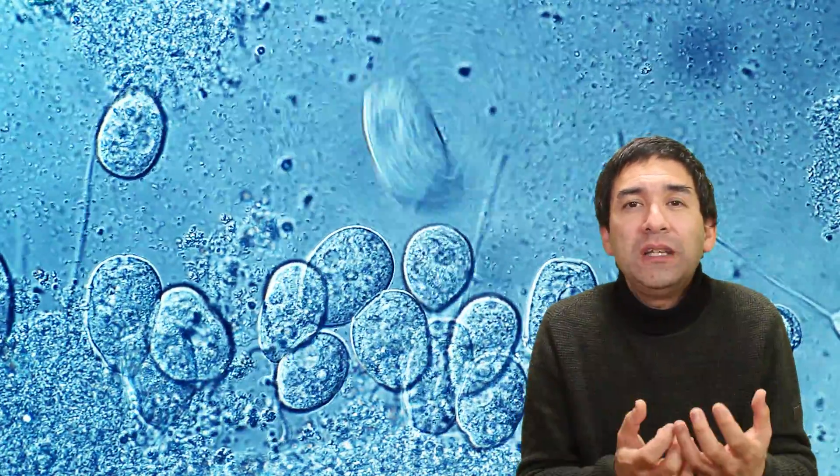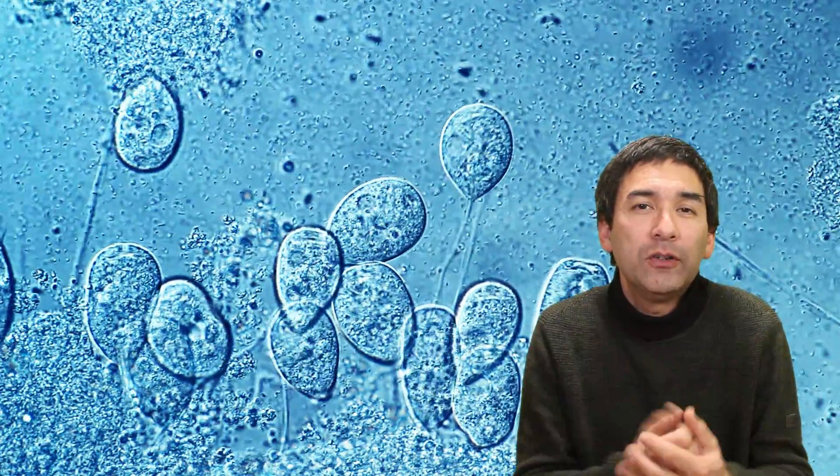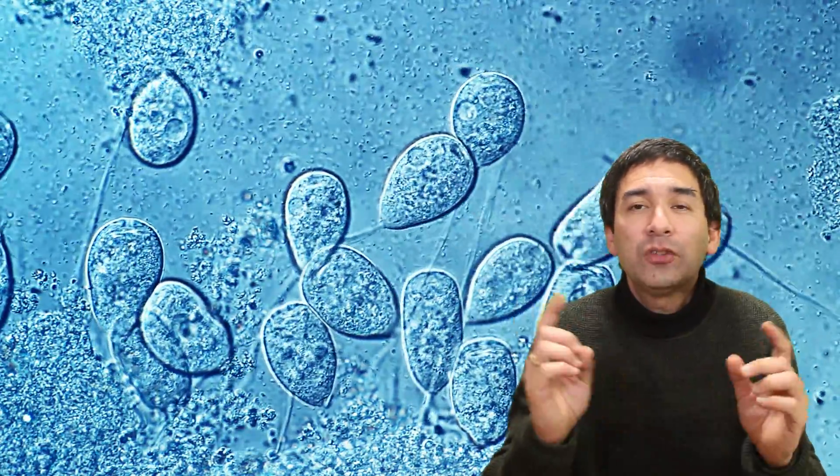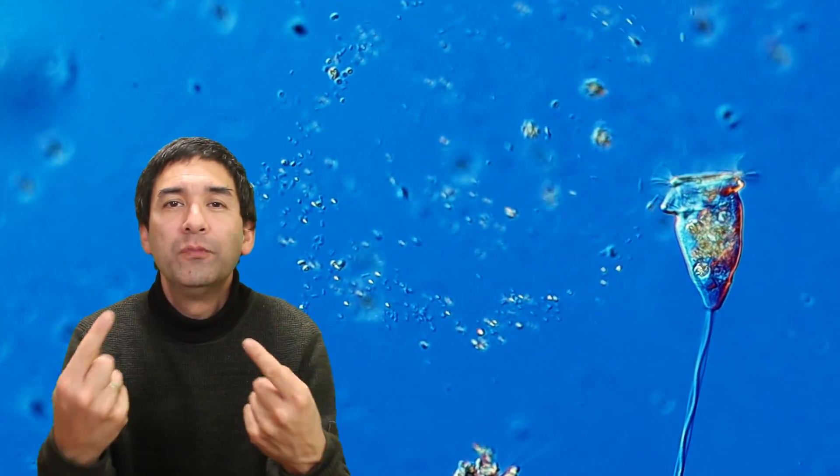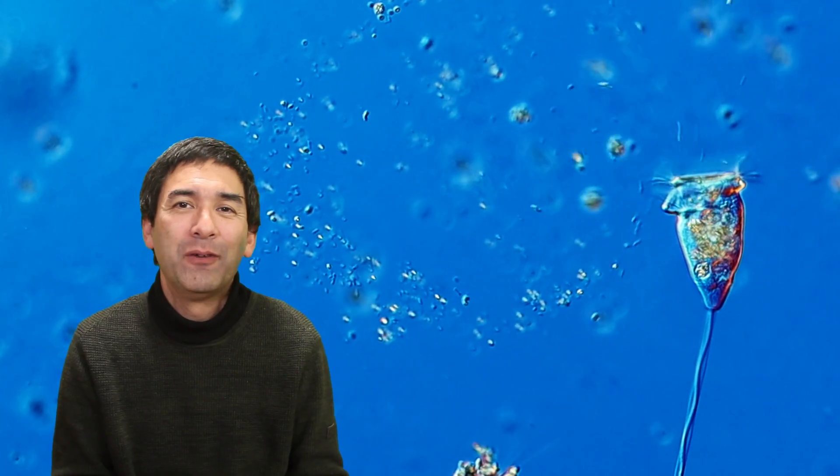It can also capture and eat smaller organisms like bacteria, for example. The cilia create the circular water stream that I already talked about, and this is called a vortex, the circular movement. And hence, of course, also the name of Vorticella.